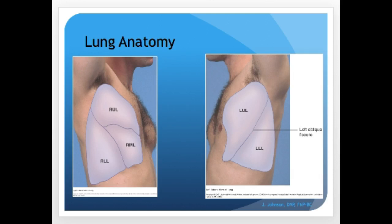Each lung is divided roughly in half by the oblique major fissure — it's an oblique slice, not horizontal. The right lung is further divided by the horizontal or minor fissure, giving it three lobes, while the left lung has only two lobes. From the lateral aspects — underneath the armpits — you can hear all the different lobes, making this a very important and often forgotten area to listen to.